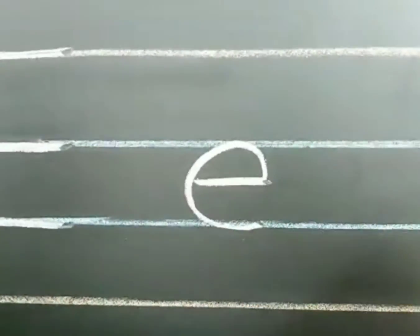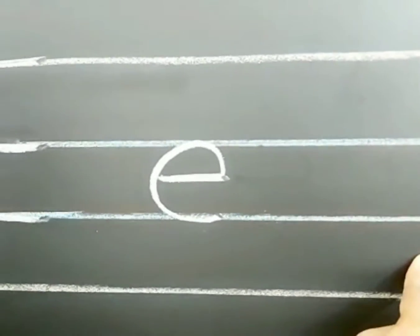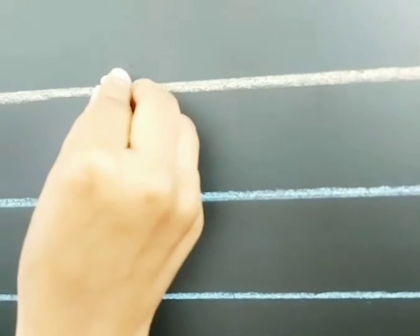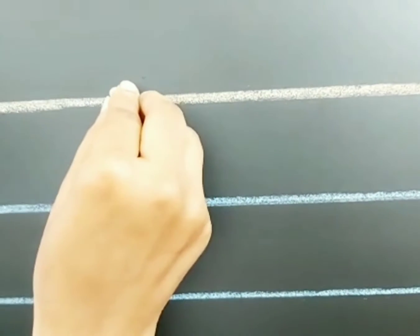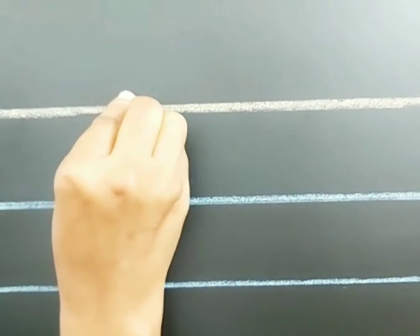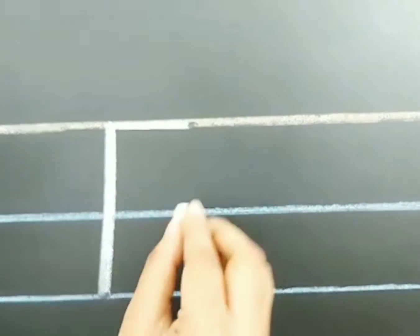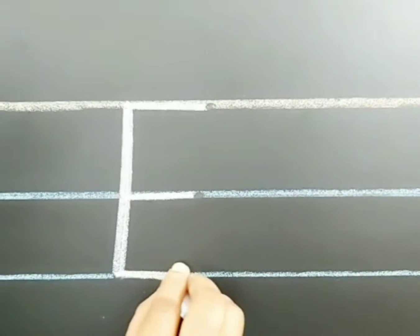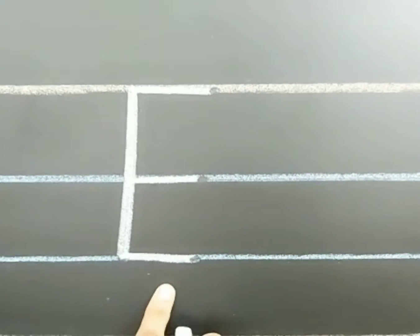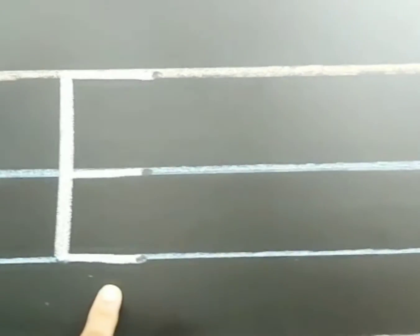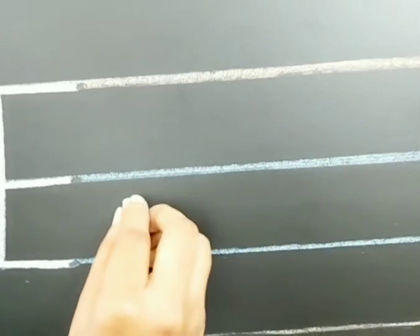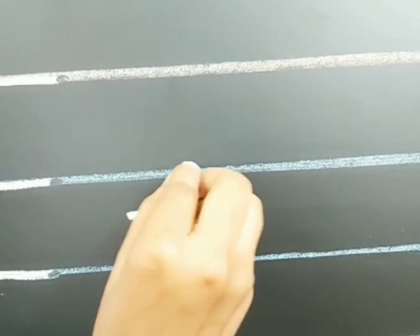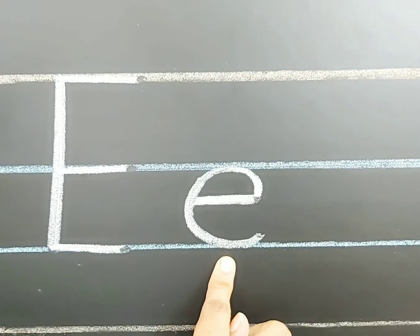Now again, we are going to write capital E and small e. Standing line — how many sleeping lines in capital E? Three sleeping lines. Sleeping line, again one sleeping line, and the last sleeping line. Capital E. Now we are going to write small e: sleeping line, and at the end of the sleeping line, draw one C curve. Small e.